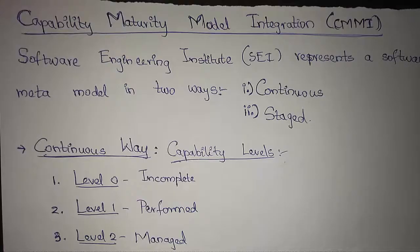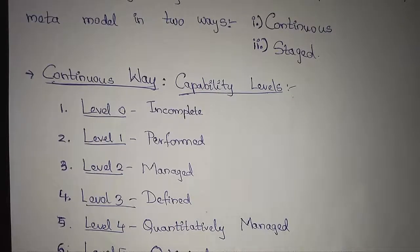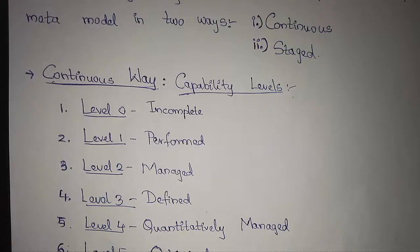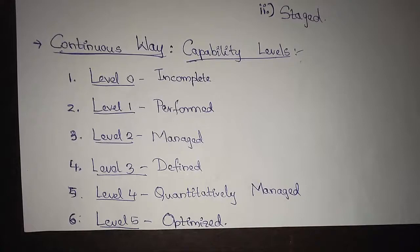CMMI represents a meta model in two ways: continuous and staged. In the continuous way, we define capability levels. A continuous model describes process areas in two dimensions. Each process area is formally assessed against specific goals and practices and is rated according to capability levels. In addition to specific goals and practices, we also have generic goals and practices.